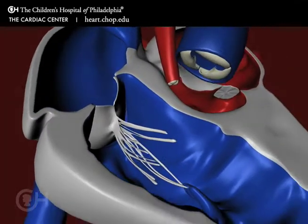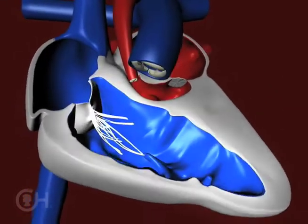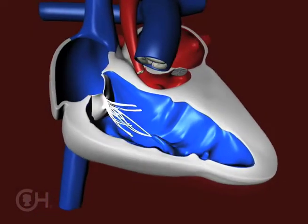The one good pumping chamber, which in hypoplastic left heart syndrome is the right ventricle, has to pump to the body.